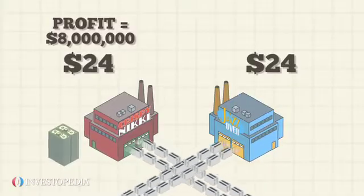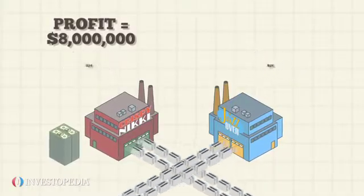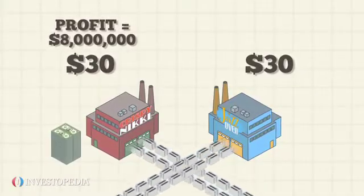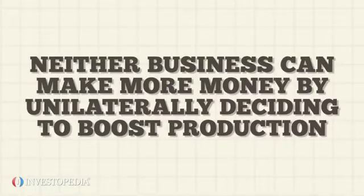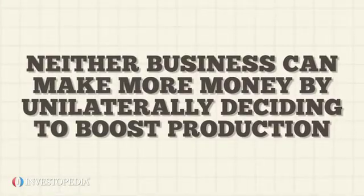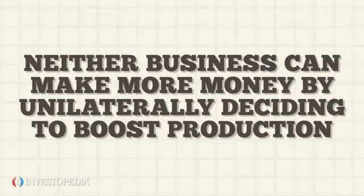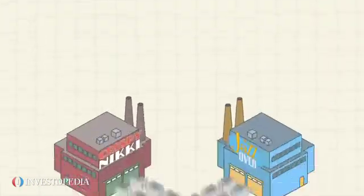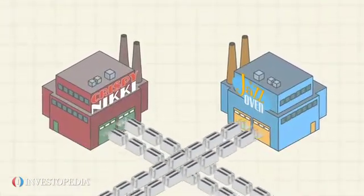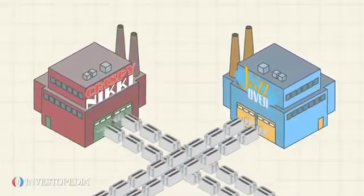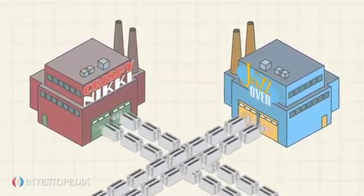As it turns out, the two companies are already in a state of Nash Equilibrium. Given the competing firm's expected response, neither business can make more money by unilaterally deciding to boost production. This example illustrates why game theorists look at decisions not in isolation, but as part of a system of interactions.